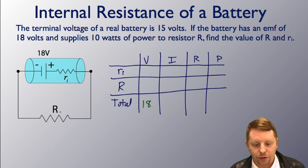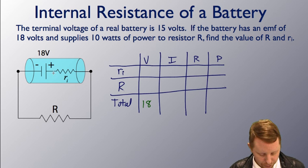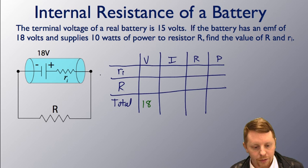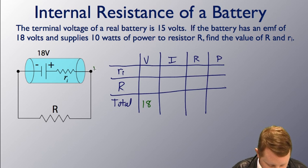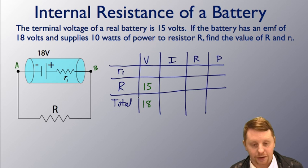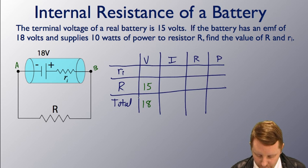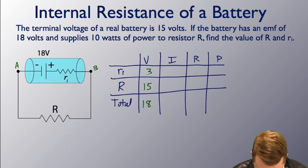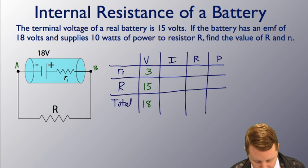I know that the voltage drop across R must be 15 volts, because that's the terminal voltage right there, VB minus VA, if we labeled that B and that A. That's going to be 15 volts, and since it's a series circuit, that means the voltage drop across RI must be 3 volts. We also know we have 10 watts of power to resistor R. So there's 10 watts.